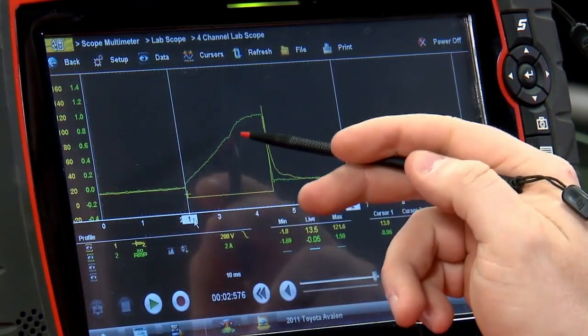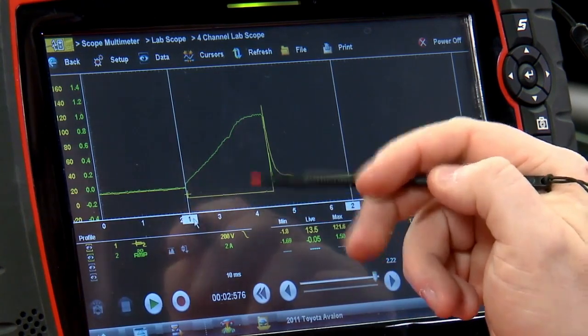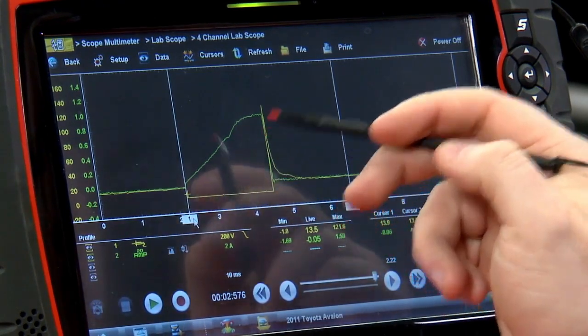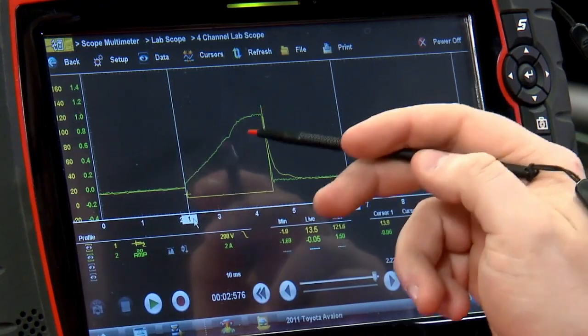If you look about halfway up this ramp right here, there's a little dip. That dip is the point where the fuel injector is actually opening and starting to spray fuel.